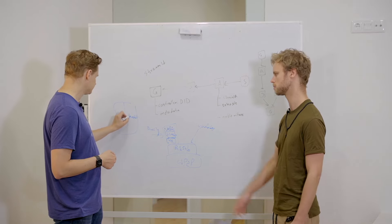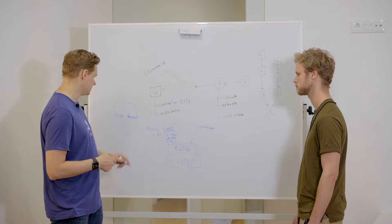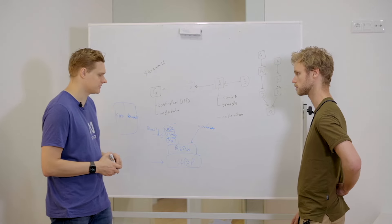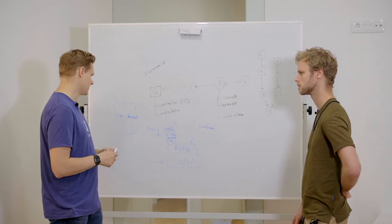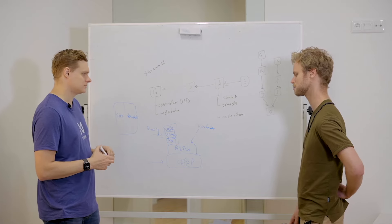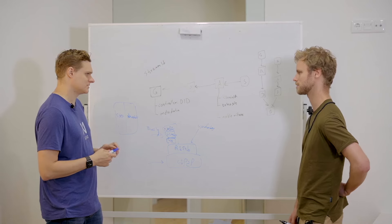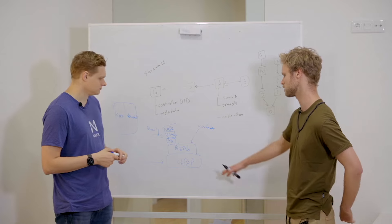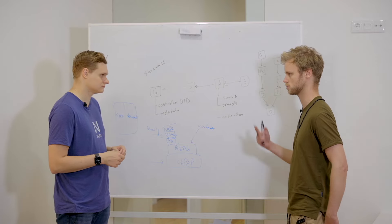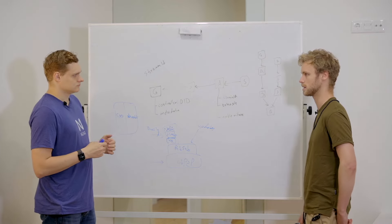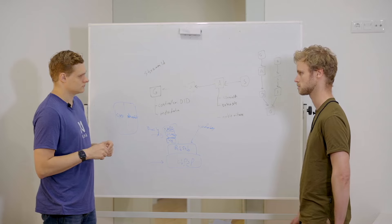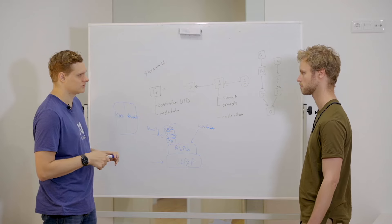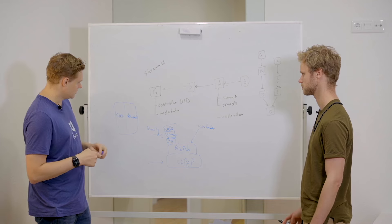A web page could potentially connect to this — crawl the DHT, find an IP address, and request data via HTTP. The JavaScript implementation of libp2p is fairly limited, and crawling the DHT from a browser is expensive, but it's possible. libp2p can expose a WebSocket, and since it's a DHT you can query it with peers you're already connected to.